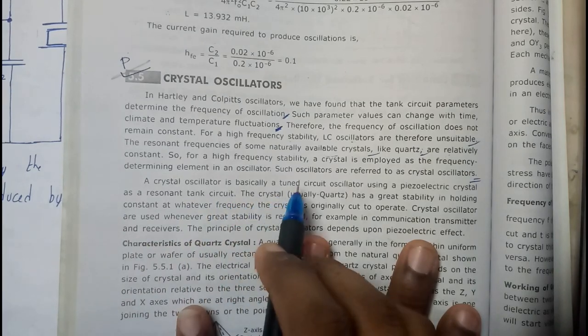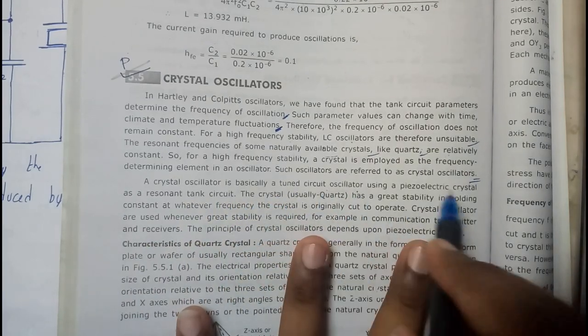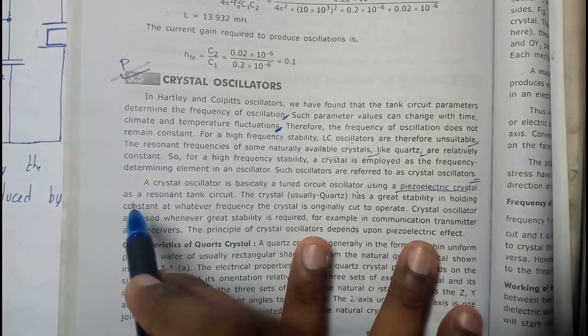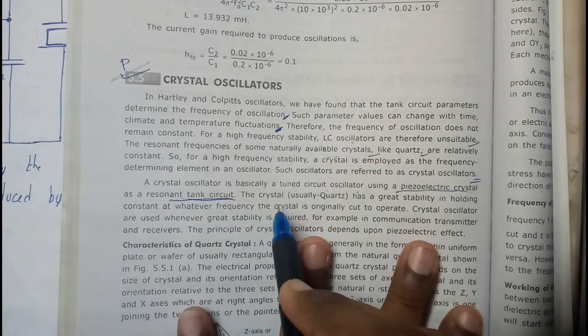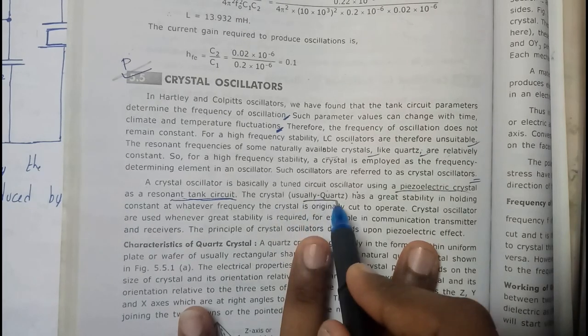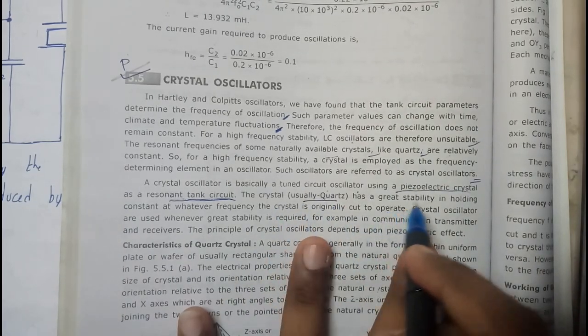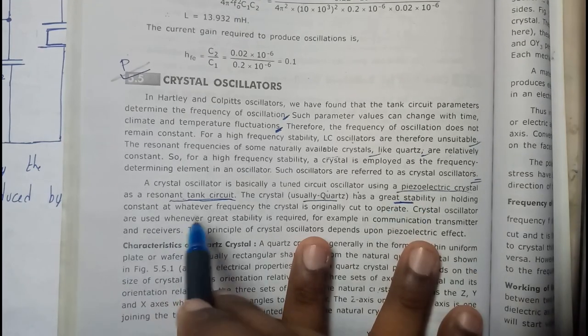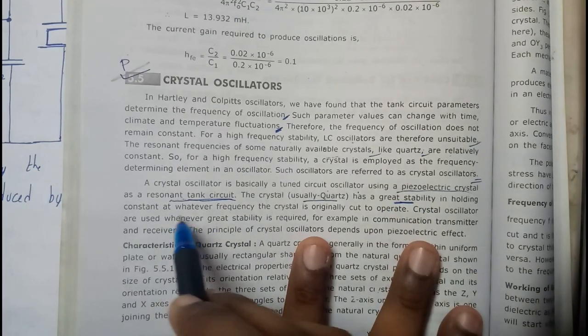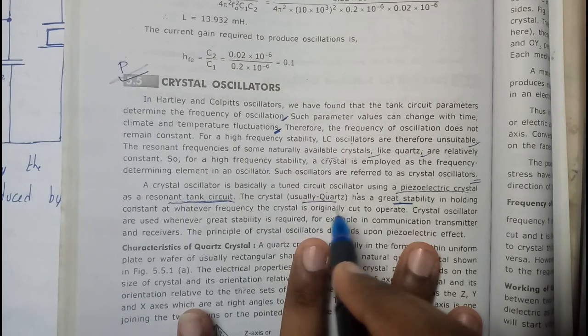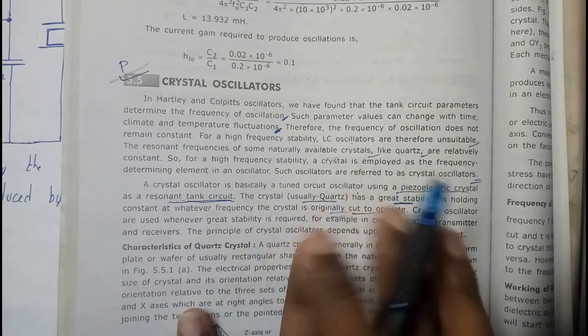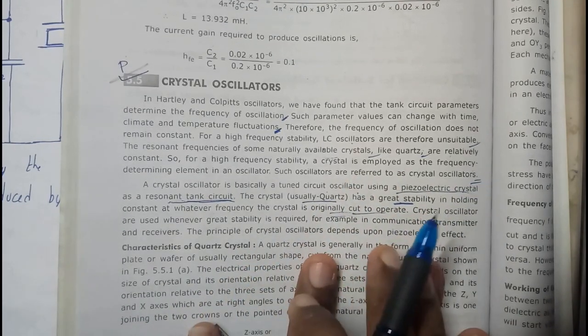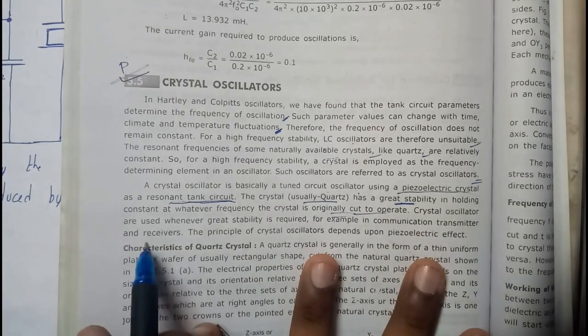Crystal oscillators are basically tuned circuit oscillators using piezoelectric crystal as a resonance tanking circuit. The crystal, usually quartz, has the greatest stability in holding constant at whatever frequency the crystal is originally cut to operate. It is particularly designed or cut into a particular shape.